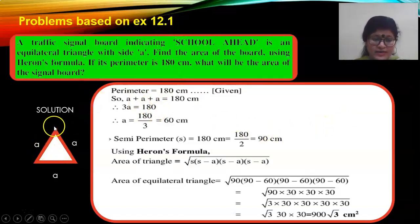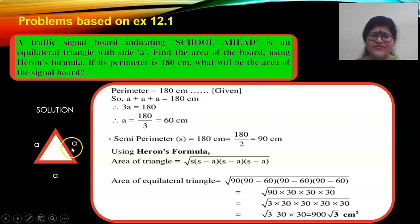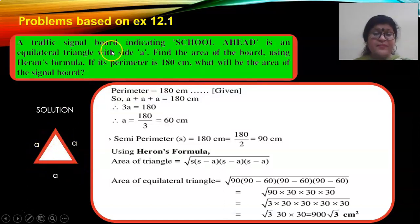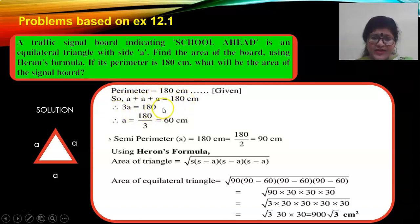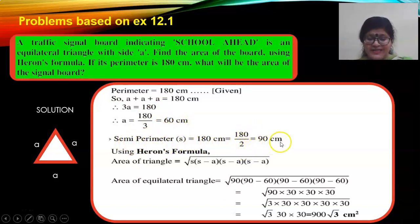Now, this is an equilateral triangle — a diagram is not compulsory. The three sides are all taken as A because all three sides are equal. You have to find the area of this equilateral triangle. The perimeter is given as 180 centimeters. So A plus A plus A equals 180, giving 3A equals 180, therefore A equals 60. Semi-perimeter is perimeter divided by 2, which is 90 centimeters.